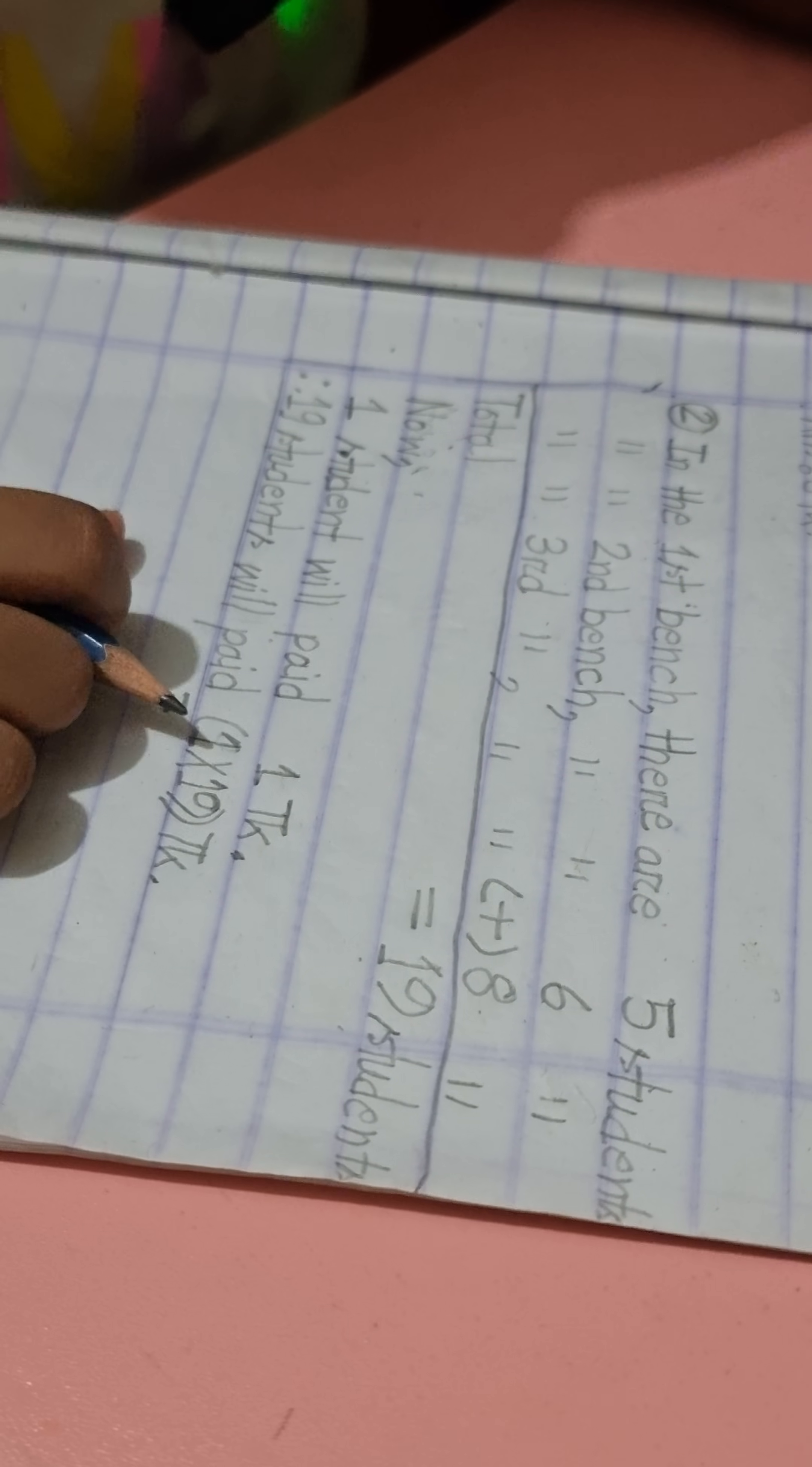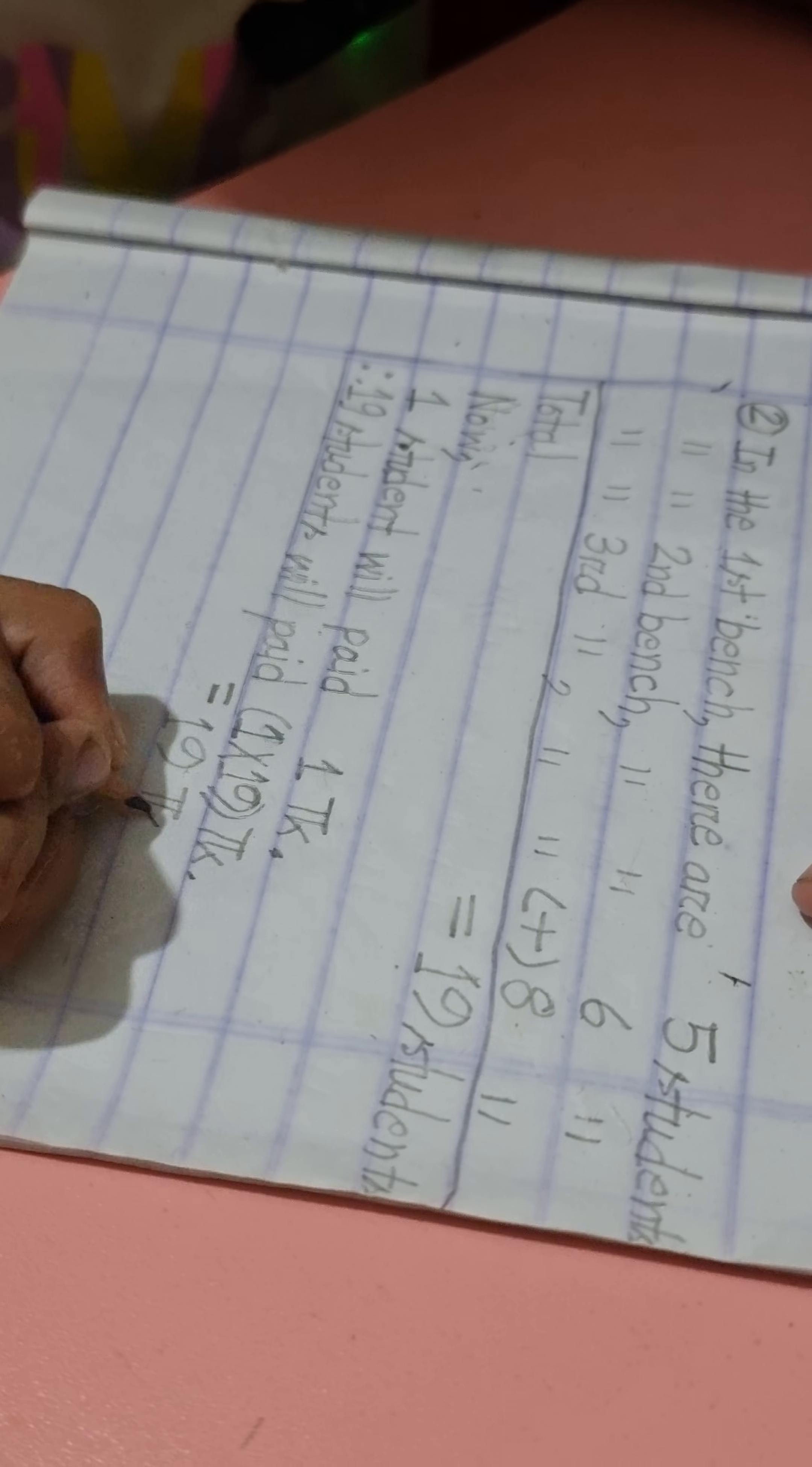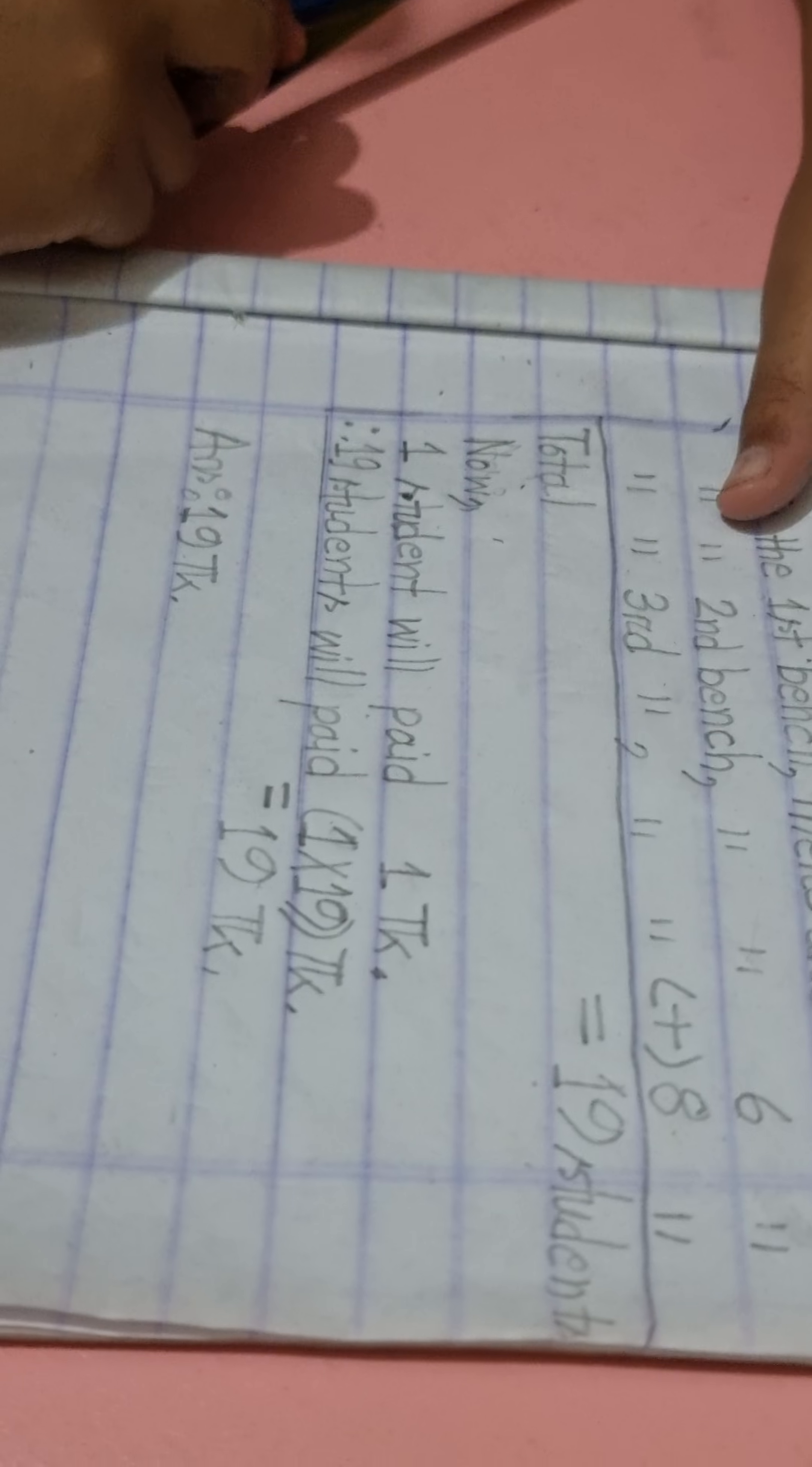Equal to, answer 19. One times 19 is 19. 19 taka.